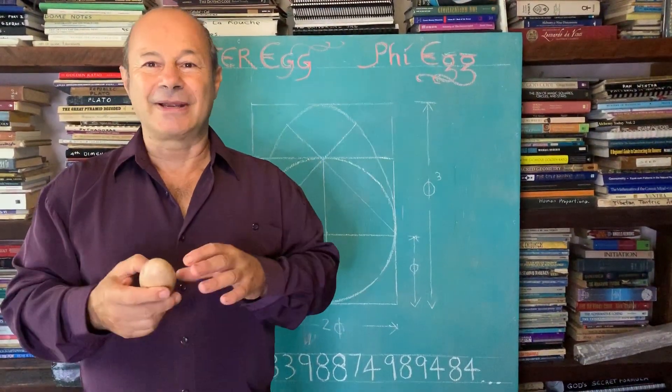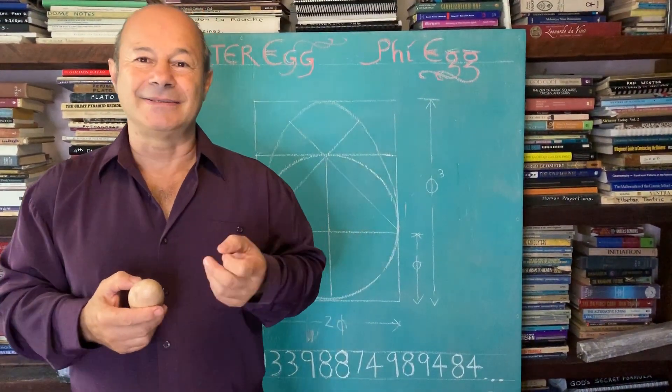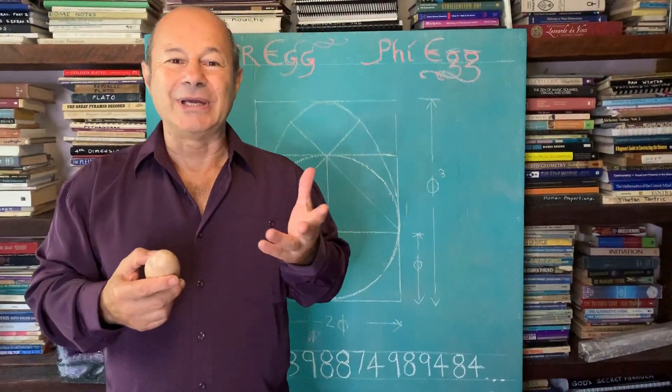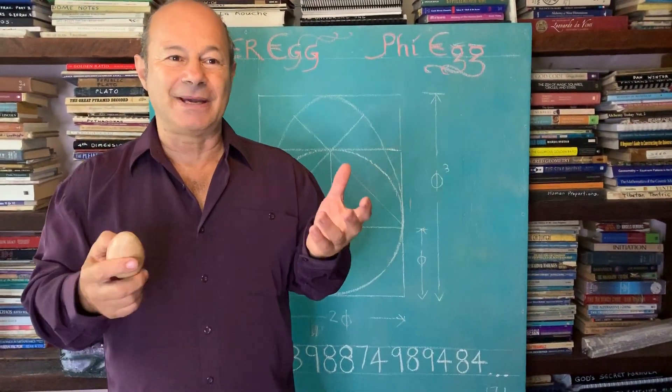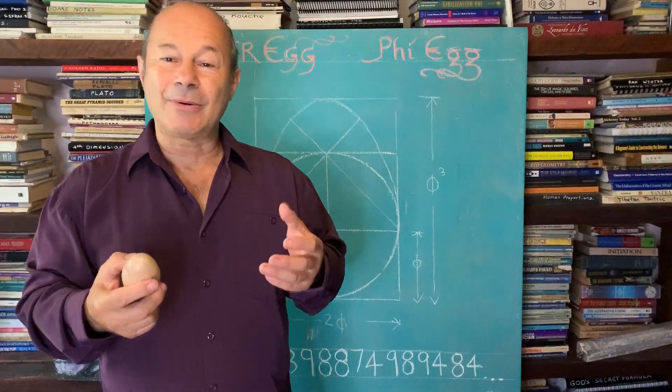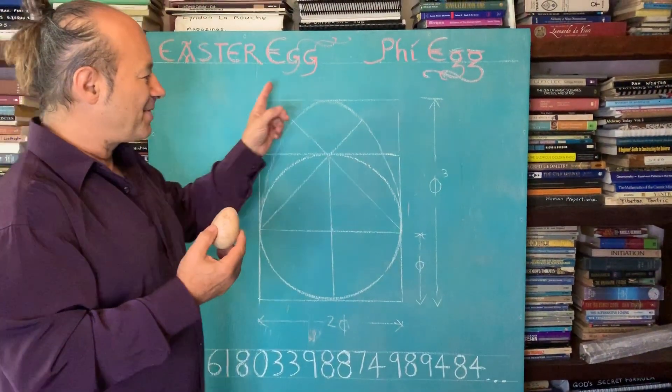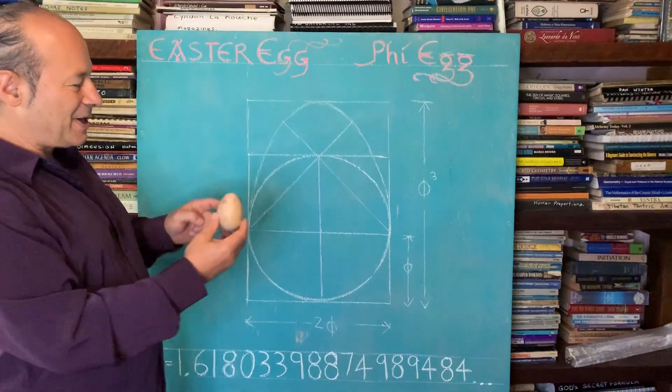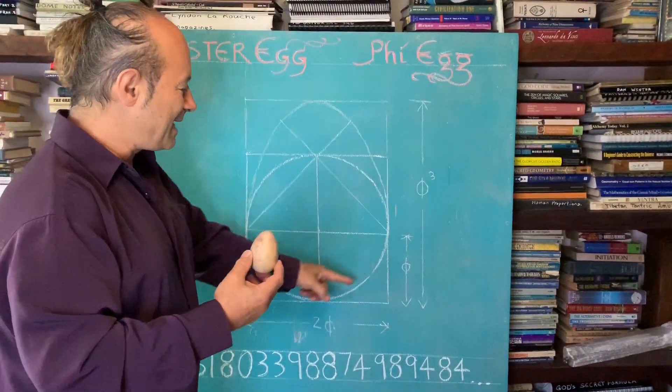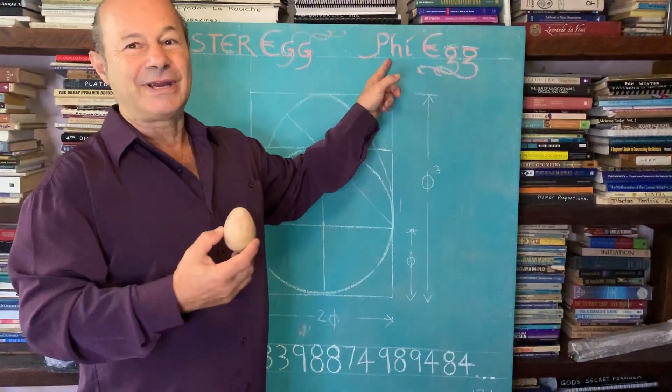The word Easter came from some pagan fertility god called Oyster, so there's lots of stories about where Easter came from. But what I would like to share with you is my excitement about the mathematics of the shape of this Easter egg, which is actually based on the golden ratio.